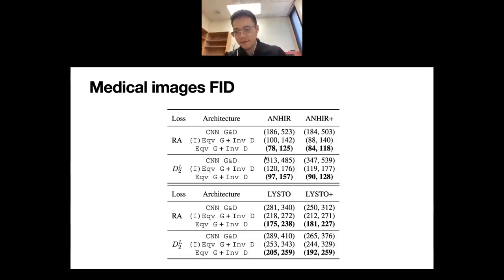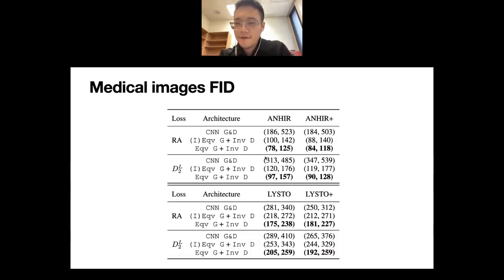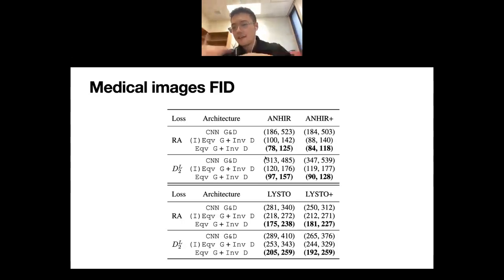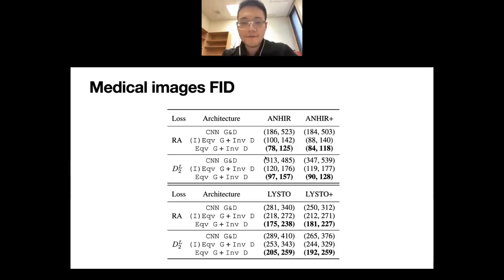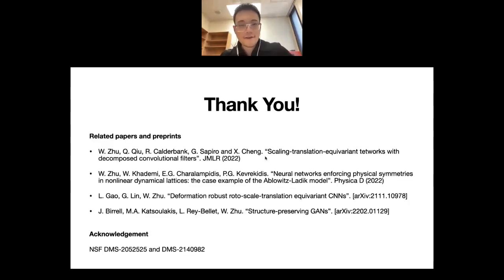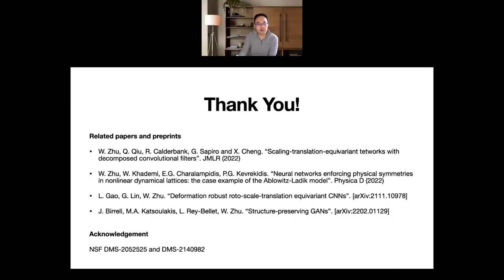This framework can be extended beyond group symmetry to structure preservation more broadly: if you know a probability measure is supported on a manifold, you can constrain the generator to sample from that manifold and the discriminator to distinguish measures over the manifold. We have extended results to other structural preservation, including a nice application in molecular dynamics coarse-graining. Please refer to our paper for details. Thank you very much — I'm happy to take any questions.